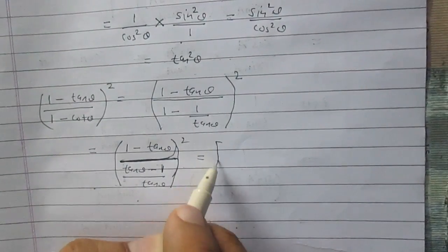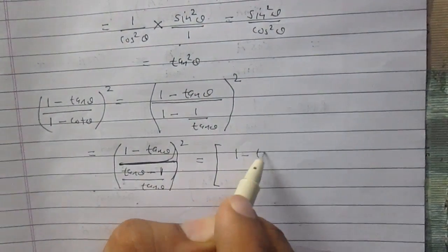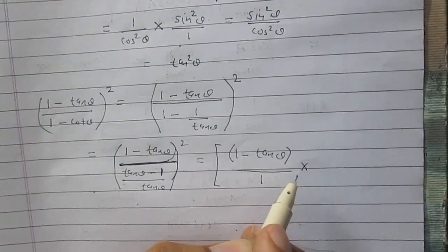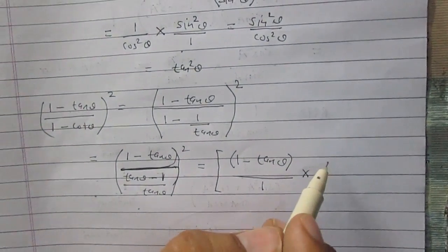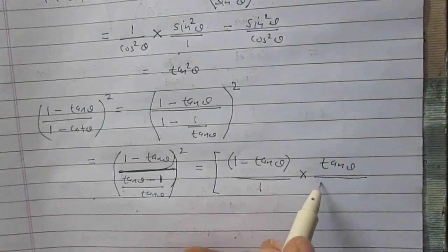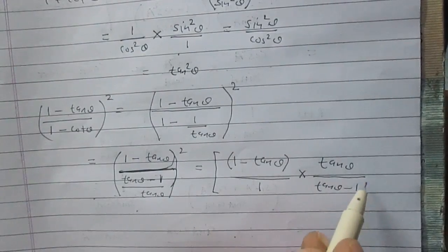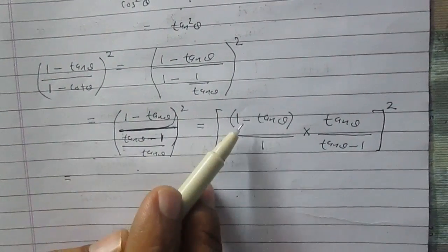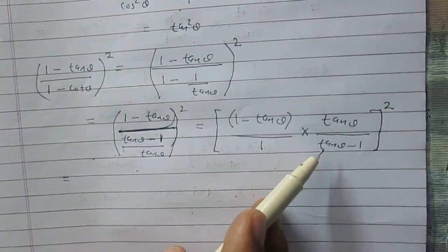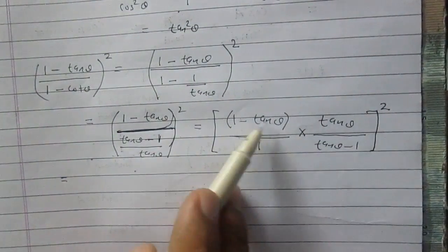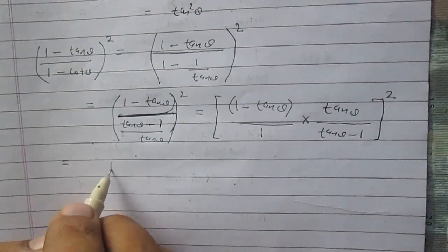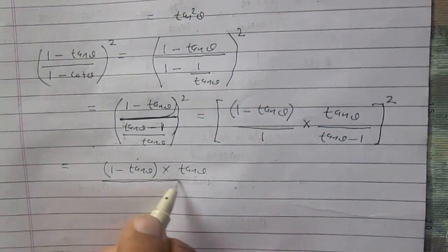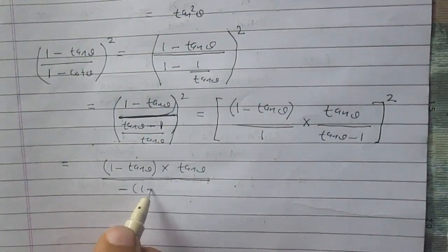The numerator remains as it is: (1 - tanθ). Multiplied by the reciprocal of the denominator, that is tanθ / (tanθ - 1), whole square. Now, (1 - tanθ) and (tanθ - 1) are negatives of each other, so I can write it as (1 - tanθ) × tanθ, whole divided by minus(1 - tanθ).